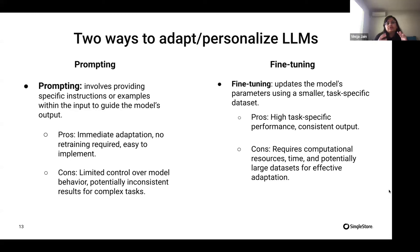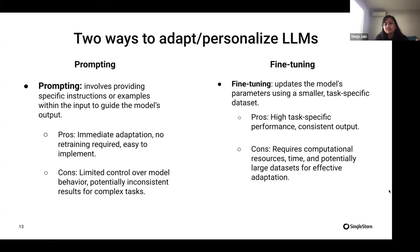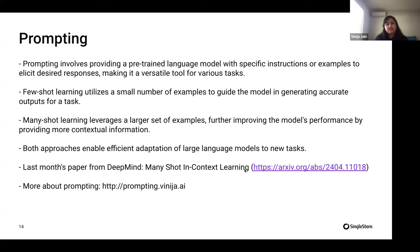With fine-tuning, what we're looking to do is update the model's actual parameters — take the model, feed it your task, and update its weights to learn the new task. The benefit is that it's more task-specific, performance improves, and output is consistent. The downside is it requires more computational resources and a larger dataset. Generally fine-tuning does produce better results than prompting but comes with significant computation costs. I'd recommend going towards prompting first, evaluating your LLM use case, and then moving on towards fine-tuning.